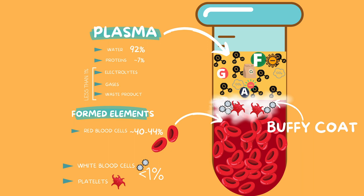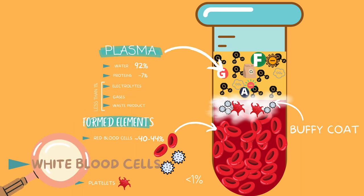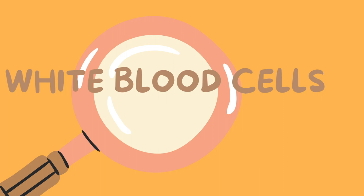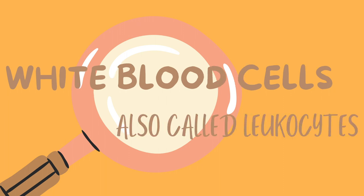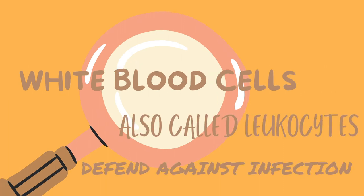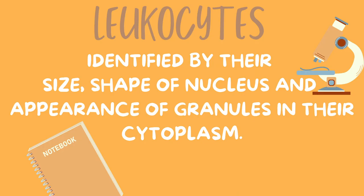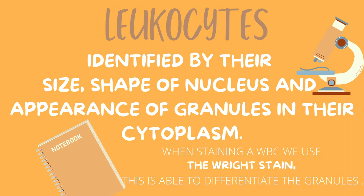Let's move on and take a magnified look at the white blood cells. These white blood cells are also called leukocytes, and their main purpose is to protect the body from infection. There are several types of white blood cells, and they are mainly differentiated by their size, shape of their nucleus, and the ability to see granules in their cytoplasm when we look at them under a microscope.